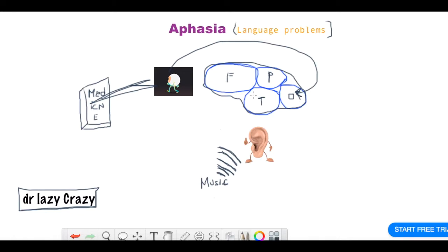From here it goes to Wernicke's area which is at the temporal lobe. Same thing happens: you hear the music, it goes to your ears and goes to your primary auditory area, and from there it goes to your Wernicke's area.